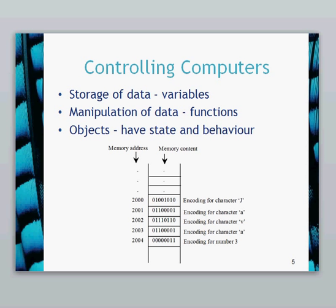What we do is, rather than having a number-based memory address, we use a simple name. So rather than having the memory address of 2000, we can have the memory address of 'my variable'. The programming language will convert names of variables into the actual memory address. Once that data is in memory, we can manipulate it using the CPU and the processor. In programming, we call any manipulation of data a function. So those are the two basic building blocks built on the architecture of the machine.